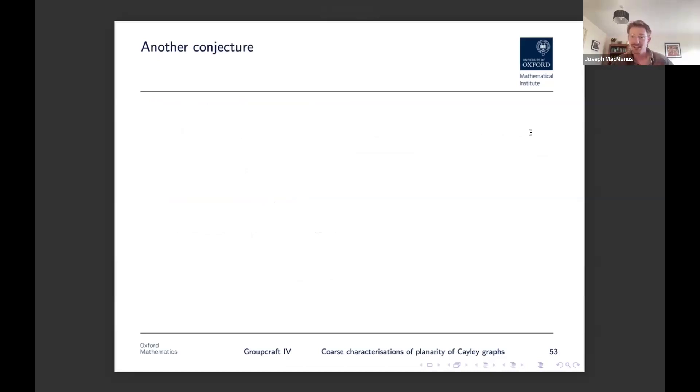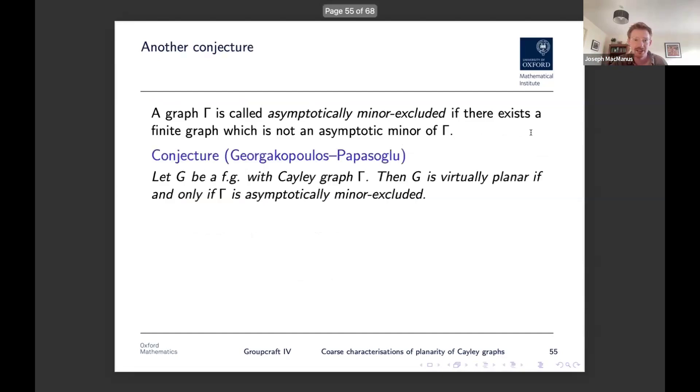So a graph gamma is called asymptotically minor excluded if there exists some finite graph which is not an asymptotic minor of our graph. And now the conjecture from the same paper is the following. So if I let G be a finitely generated group with a Cayley graph gamma, then the conjecture is that G is virtually planar if and only if its Cayley graph is asymptotically minor excluded. So one direction of this is kind of easy. If you're virtually planar, then because asymptotic minors are a QI invariant, you certainly can't be, well, you have to be asymptotically minor excluded. The converse seems harder.